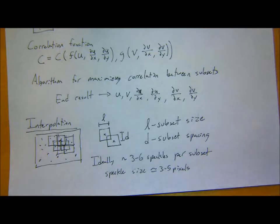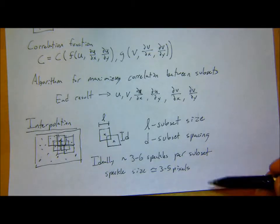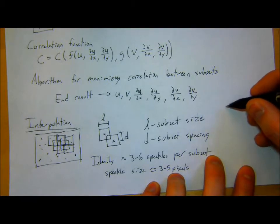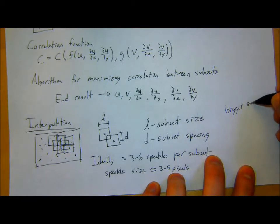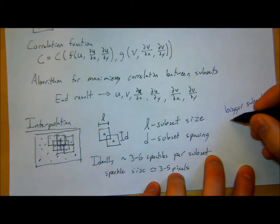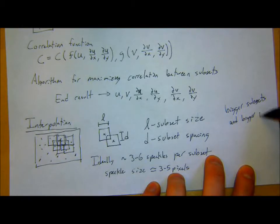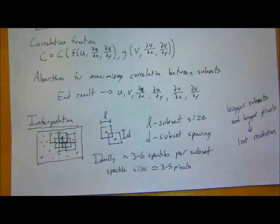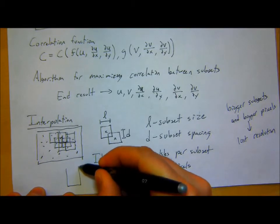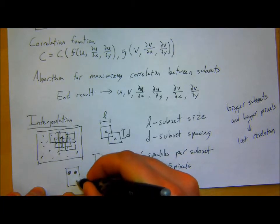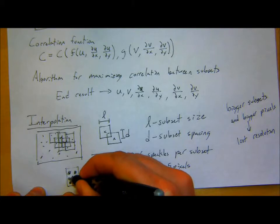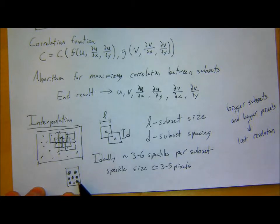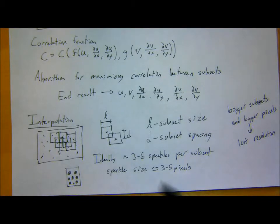This changes if you're looking at a very big part. You have a limited number of pixels in your camera, so if you're looking at a very big part, the speckles need to be relatively large. If you're looking at something super tiny, the spots need to be super tiny. Bigger subsets and bigger pixels lead to lost resolution. The smaller the speckles are, the better resolution you can get — but individual speckles still have to be big enough to actually image with your camera.